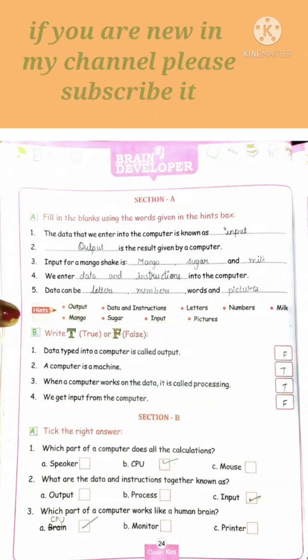Number four: we enter data and instructions into the computer. How do we enter the computer? Answer is data and instructions. Number five: data can be letters, numbers, words, and pictures.